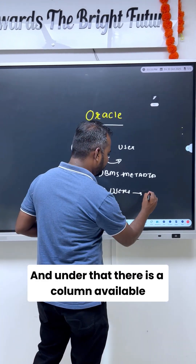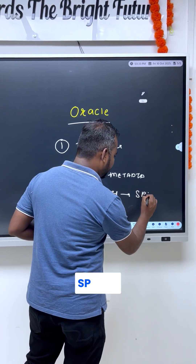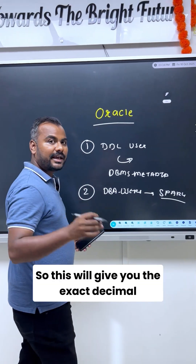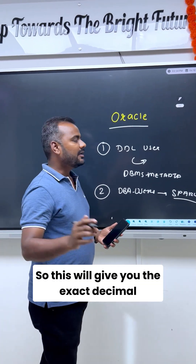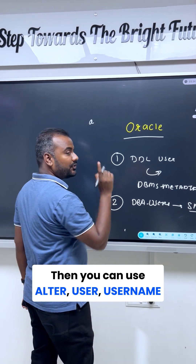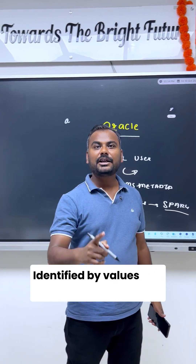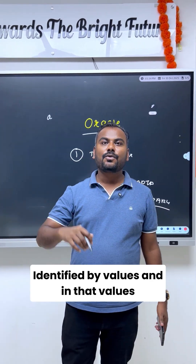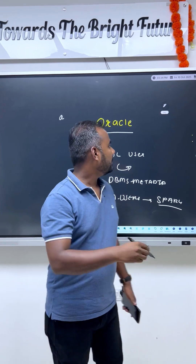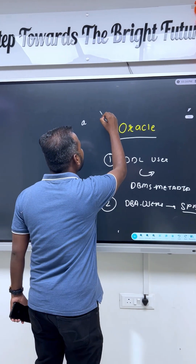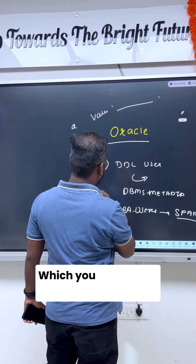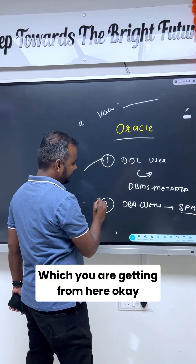The second method is you can use DBA_USERS, and under that there is a column available called SPARE. This will give you the hexadecimal value. You can then use ALTER USER username IDENTIFIED BY VALUES and mention that hexadecimal format which you are getting from there.